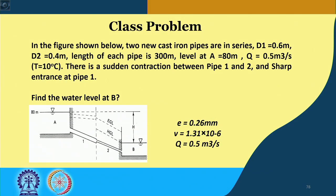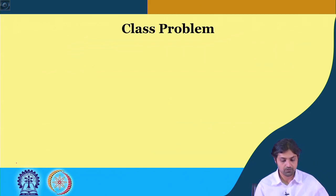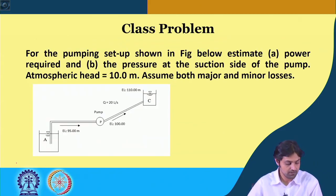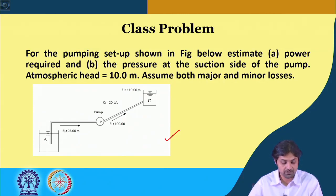Welcome back. Last class we solved a particular problem shown in the slide and we are going to continue in this lecture and solve yet another question. The question is for the pumping setup shown in the figure below: estimate the power required and the pressure at the suction side of the pump. The atmospheric head here is 10 meters and we have to assume both the major and the minor losses.